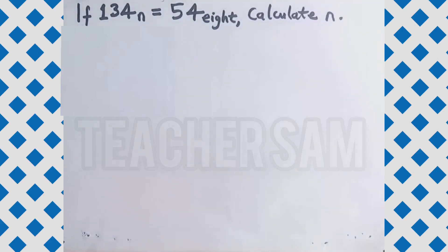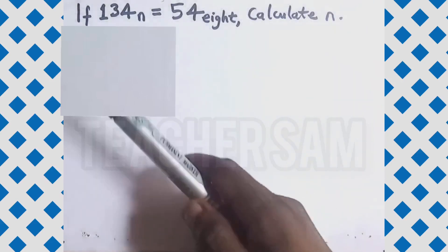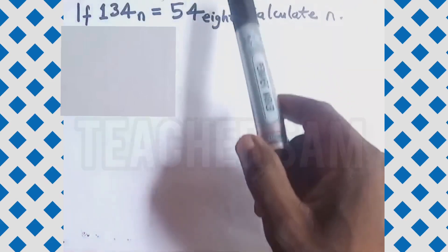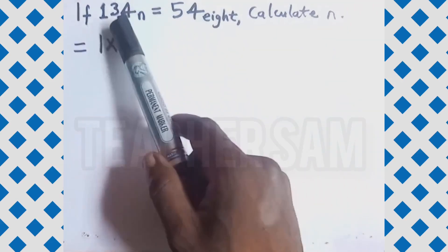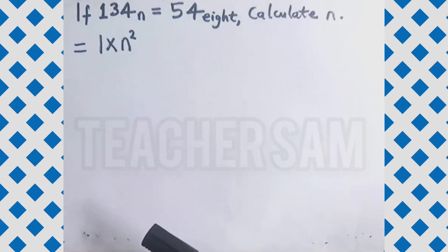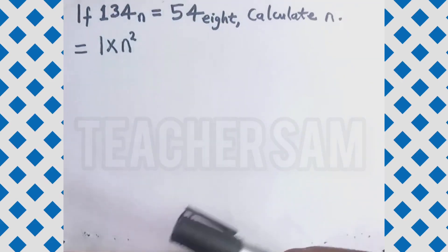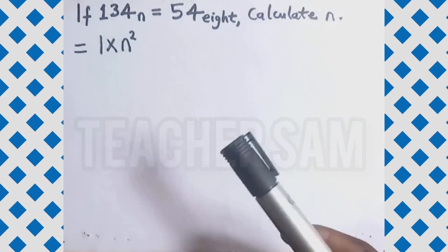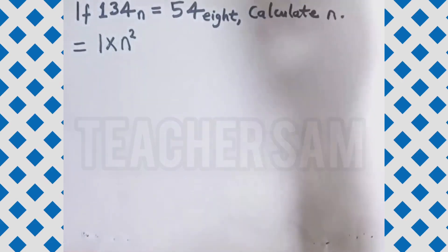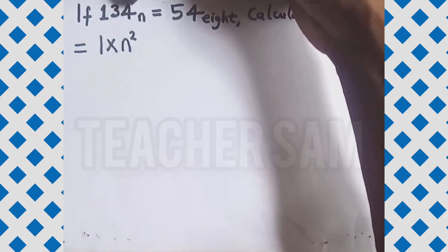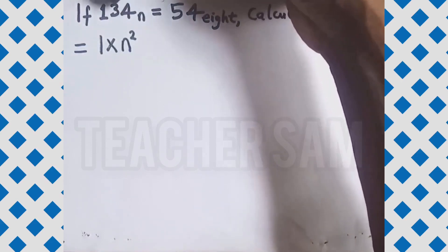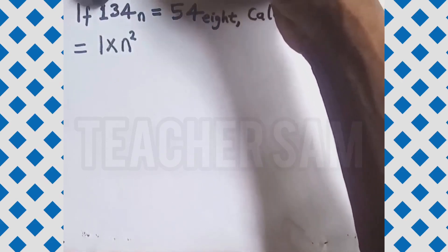For us to solve this equation, all we need to do is to express both sides in base 10. If we are already familiar with number base, we are going to multiply by n raised to the power 0, power 1, and power 2. So the place values will be 0, 1, and 2.